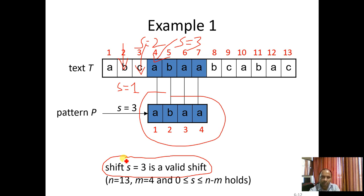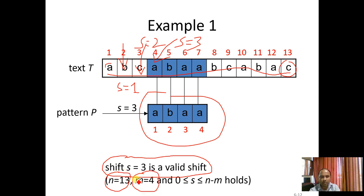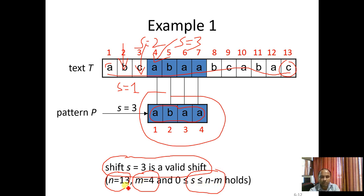Up to which point do we repeat this procedure? We repeat until the shift value is less than or equal to n minus m. In this case, 13 minus 4 equals 9, so we can shift up to 9. If we go beyond that, suppose the pattern is at a position where some characters match but others don't, and performing another shift would push the pattern out of range — that is not possible. So the maximum shift value can be n minus m.